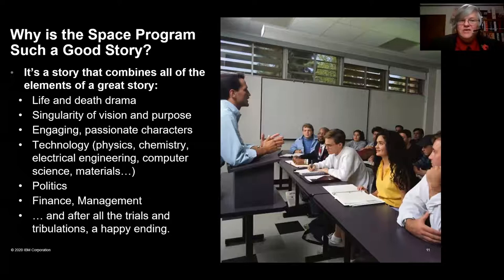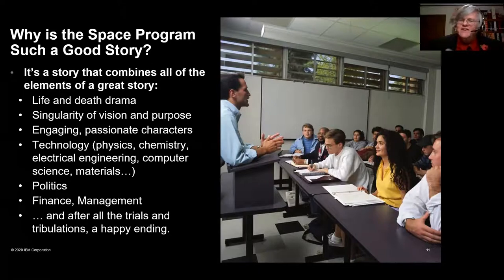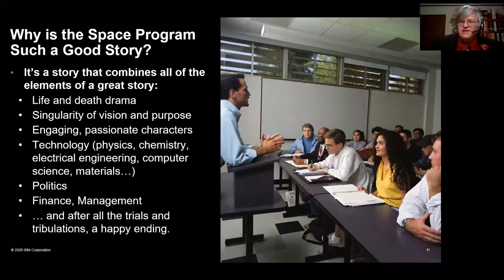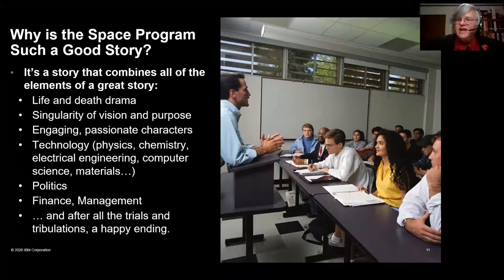Why is this a good story? It's a story that involves everything a good story should have. It's got life-and-death drama — if things go wrong, people will die. And in fact, things went wrong and people died. There was a singularity of vision and purpose. The characters involved were engaging folks. These gentlemen who were astronauts were our heroes. And then there's the technology — every aspect: physics, chemistry, electrical engineering, computer science before we knew to call it that, material science. And there was a huge political component, because not everybody thought this was a great idea.